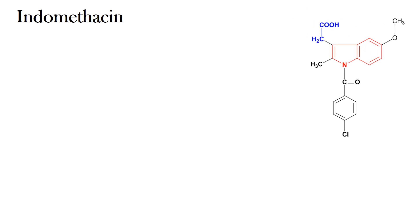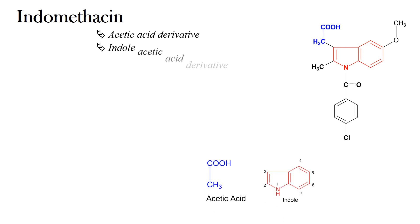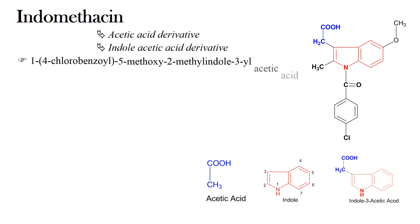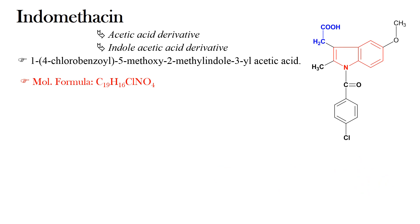Here we will begin with the structure. Indomethacin is a derivative of acetic acid, and more accurately, it is a derivative of indole-3-acetic acid. The chemical name of Indomethacin is 1-(4-chlorobenzoyl)-5-methoxy-2-methyl-indole-3-acetic acid. The molecular formula is C19H16ClNO4 and its molecular mass is 357.5.